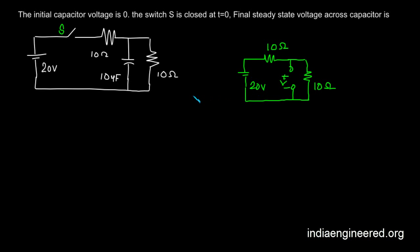We have 20 volt and a voltage divider, so it is quite easy. The answer is 20 by 2, that will be 10 volts. We have 20 volt divided equally across two 10 ohm resistors, so the voltage here will be 10 volt.